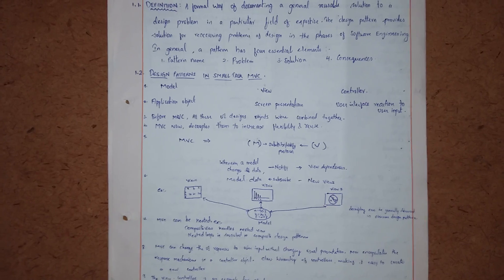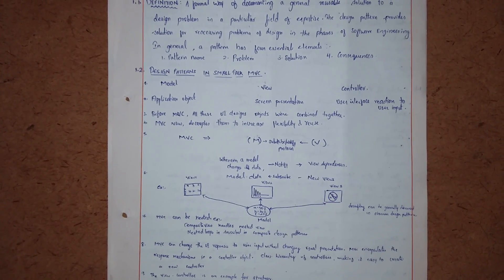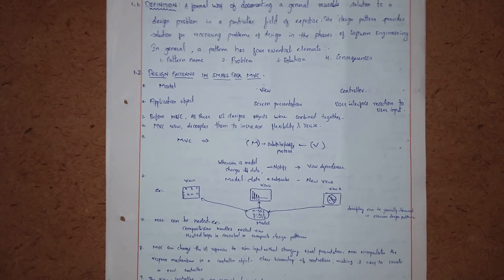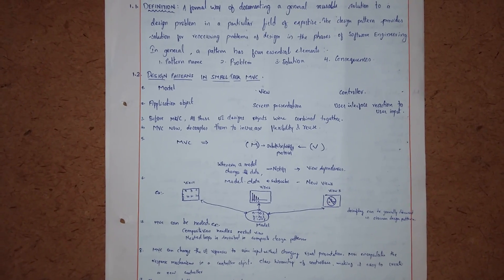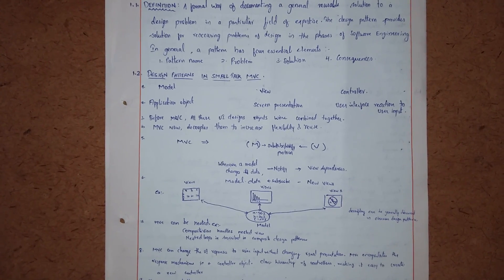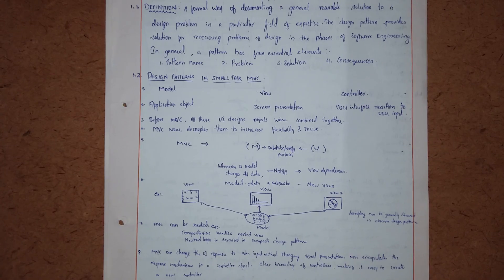In Model View Controller, MVC stands for Model View Controller. Model is nothing but an application object, view is a screen presentation, and controller is a user interface interaction to user input.